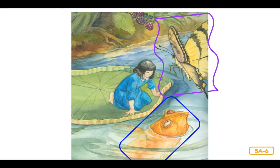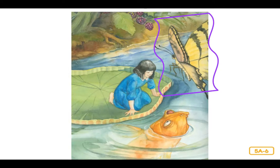Lily pads have a stalk under the water — the stalk was holding the lily pad in place. At last, the leaf broke free and floated down the stream. Away went Thumbelina, gently spinning with the current. Gradually, her fear left her and she began to enjoy the journey. Never before had she been outside. Thumbelina floated down the river far, far away from the mother toad and her son.